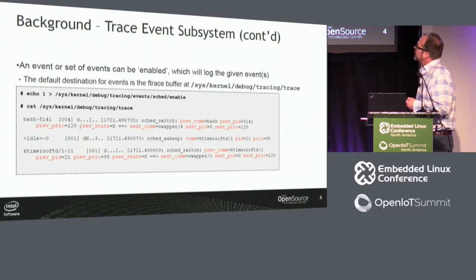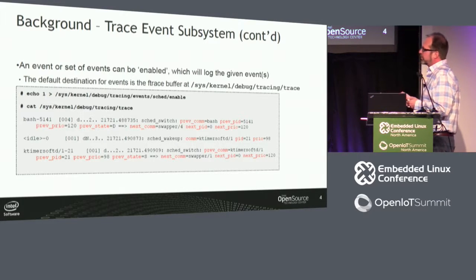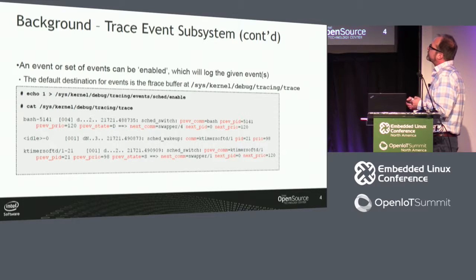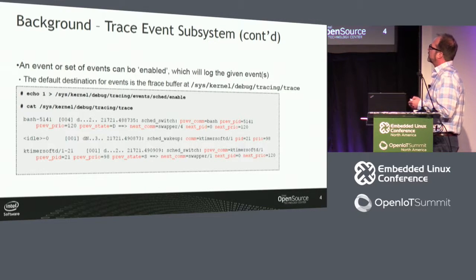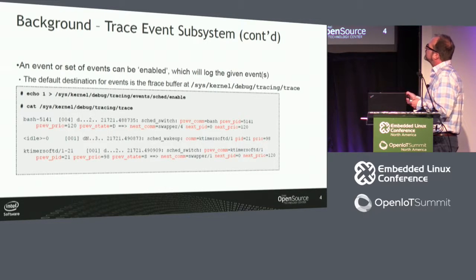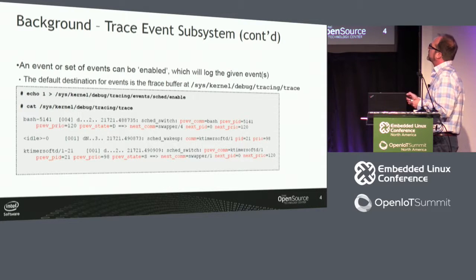Events can be enabled from the command line. Essentially, you echo 1 to the enable file. In this case, we're actually enabling a whole subsystem — the scheduler subsystem — not just one event.